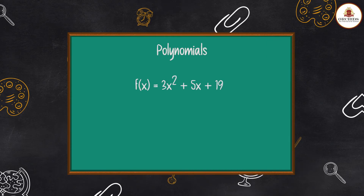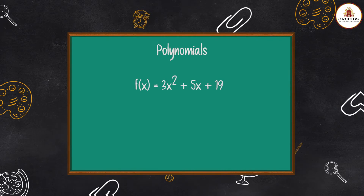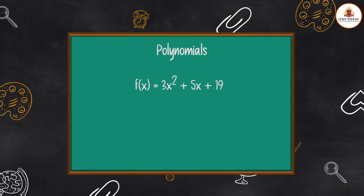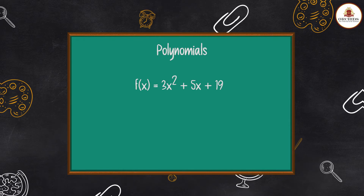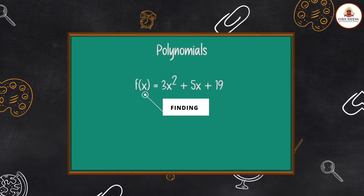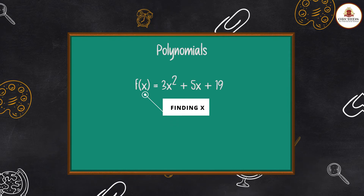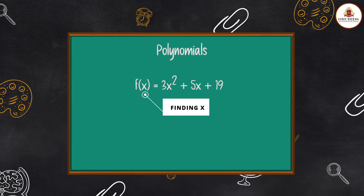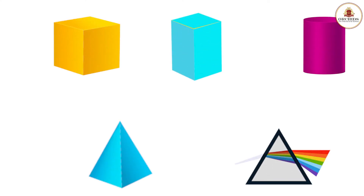Polynomials: Next we move on to polynomials, where you will see a common formula f(x) = 3x² + 5x + 90, which you have to solve after finding x.